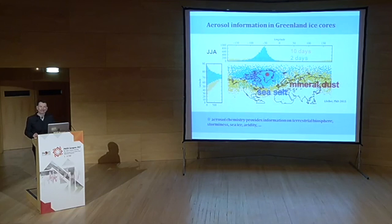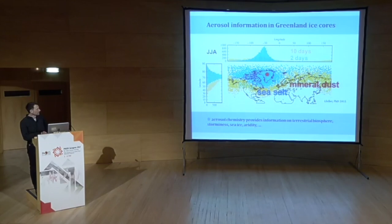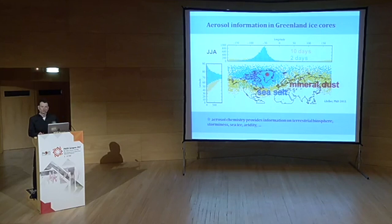I show here three examples of aerosol species we can measure in the NEEM ice core. We can measure ammonium, which is a biogenic tracer coming from North America. We can measure sea salt aerosol, which comes partly from the open ocean (North Atlantic) but also, as recently shown by Rachel Rhodes, from sea ice in the Baffin Bay. And we can look at mineral dust aerosol, which comes from East Asian desert regions. All this information comes into the ice core on the same age scale.